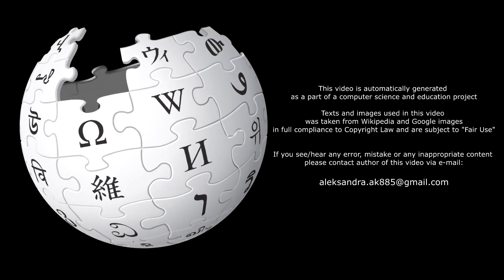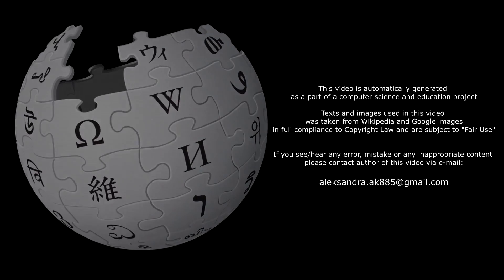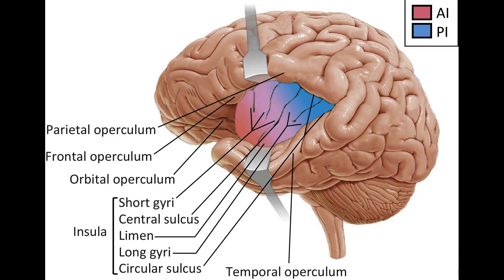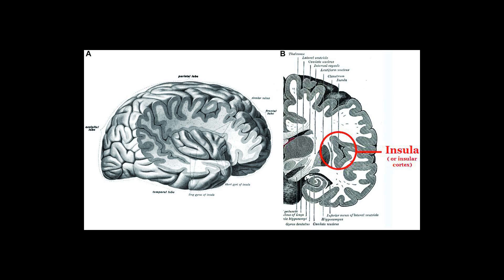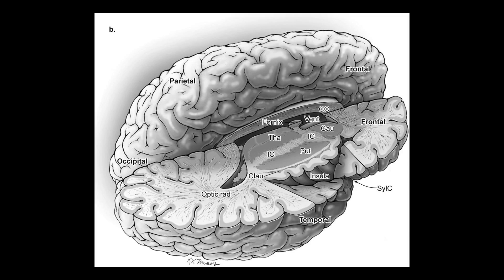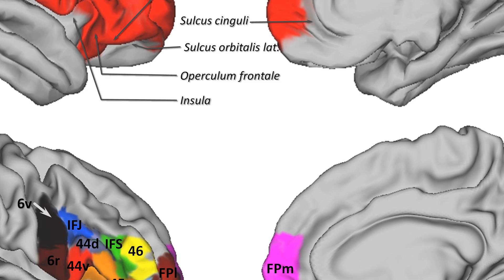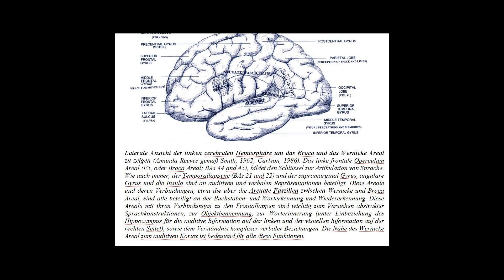In human brain anatomy, an operculum — Latin meaning 'little lid' (plural: opercula) — may refer to the frontal, temporal, or parietal operculum, which together cover the insula as the opercula of the insula. It can also refer to the occipital operculum, part of the occipital lobe.